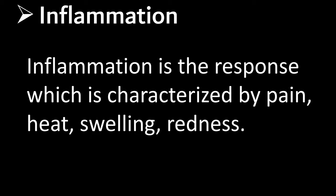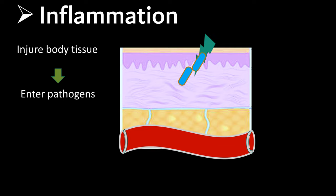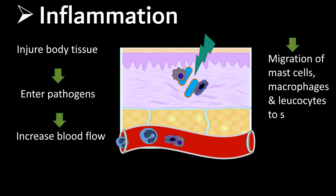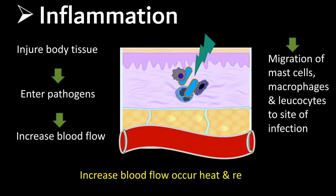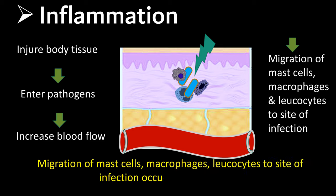Inflammation is the response characterized by pain, heat, swelling, and redness when injured body tissue is entered by pathogens. Inflammation increases blood flow. Migration of mast cells, macrophages, and leukocytes to the site of infection causes increased blood flow, resulting in heat and redness, as well as swelling and pain.